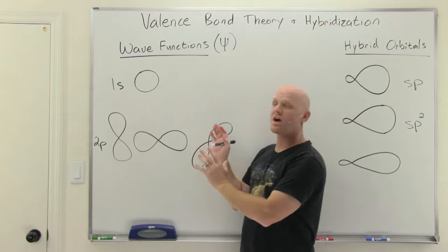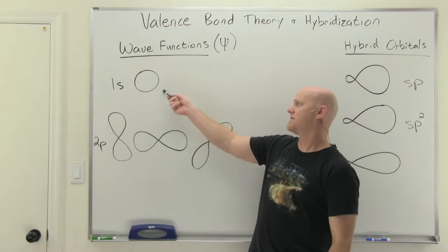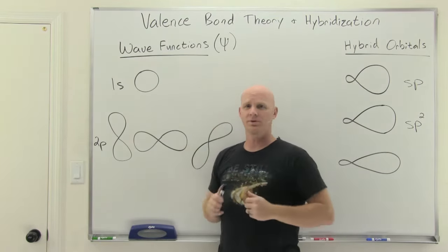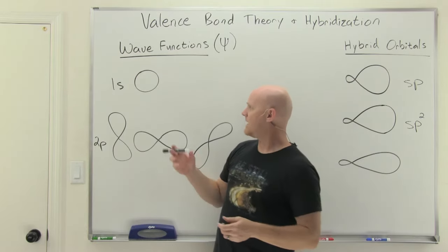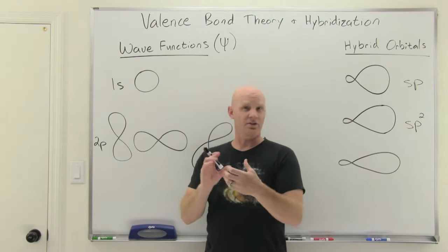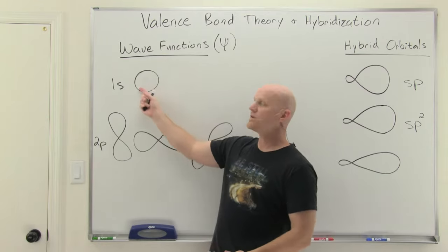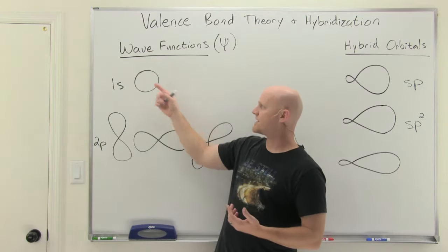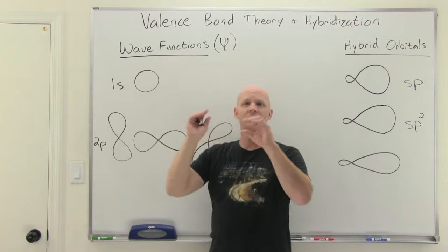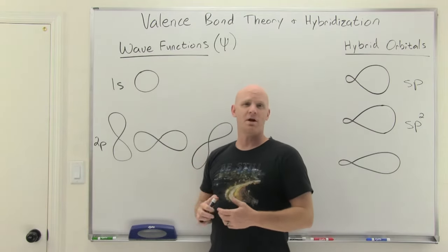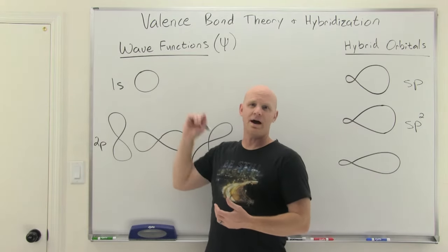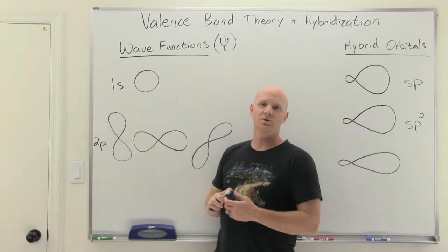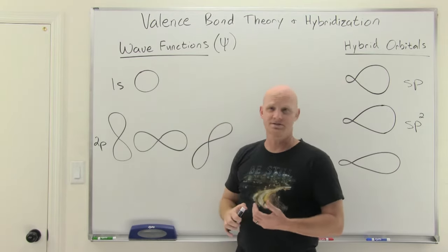We need to remind ourselves what atomic orbitals look like. First, the 1s orbital — it's just a nice spherical orbital, a solid sphere like a bowling ball, not a basketball. It gives you an idea of where you can find an electron around the nucleus. The nucleus is at the center of that sphere, and somewhere in that sphere — to the 95% probability level — is what we're mapping. We call those wave functions.